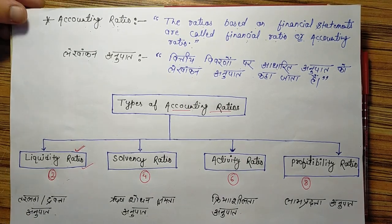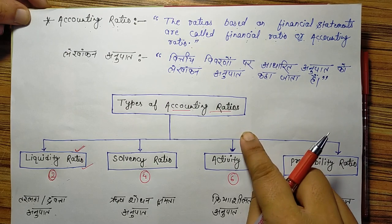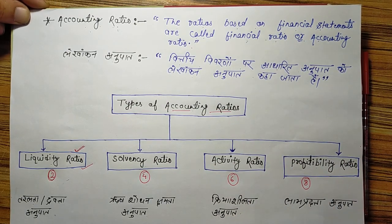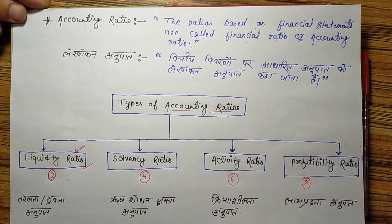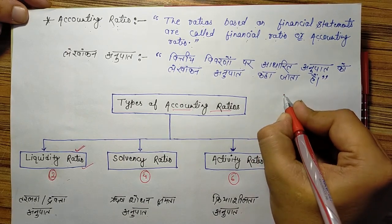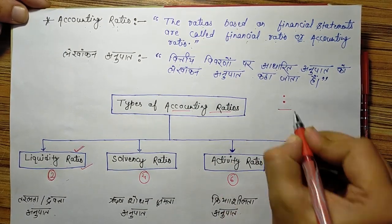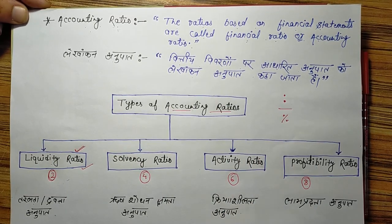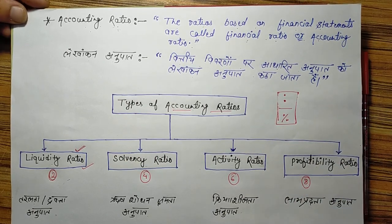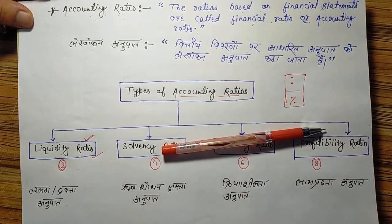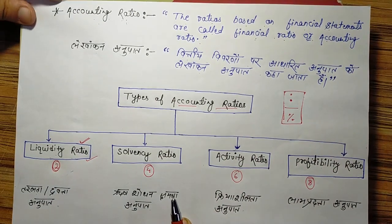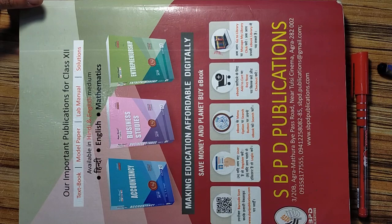One important thing about this chapter: although it is part of accountancy, you do not need to write journal entries, ledger, trial balance, or debit/credit. You just need to take the amounts of elements in the financial statement — assets, capital, liabilities, expenses and losses, income and gains — and present them as a ratio. A ratio can be presented as 'is to', as a fraction, or as a percentage. Today we will cover liquidity ratio; solvency, activity and profitability ratios will be in upcoming classes.